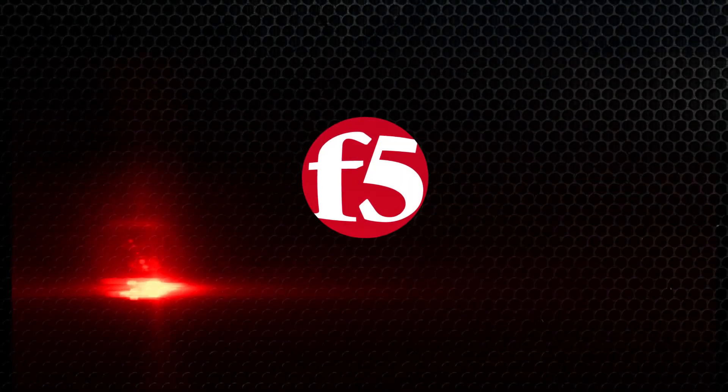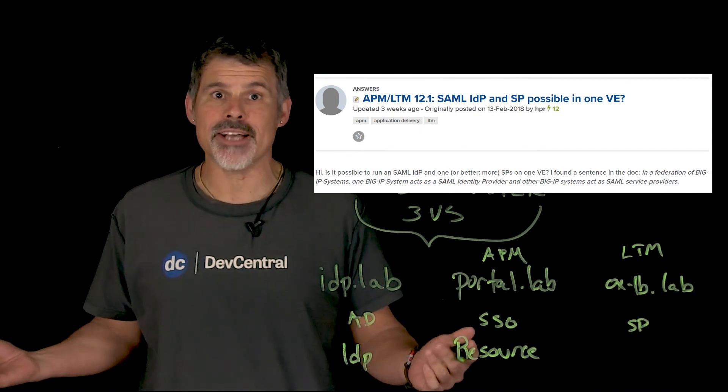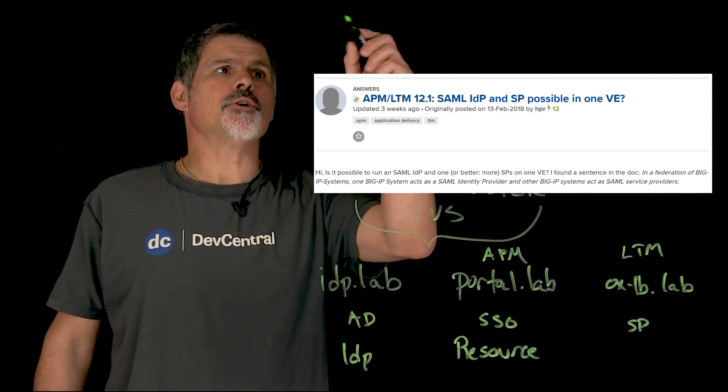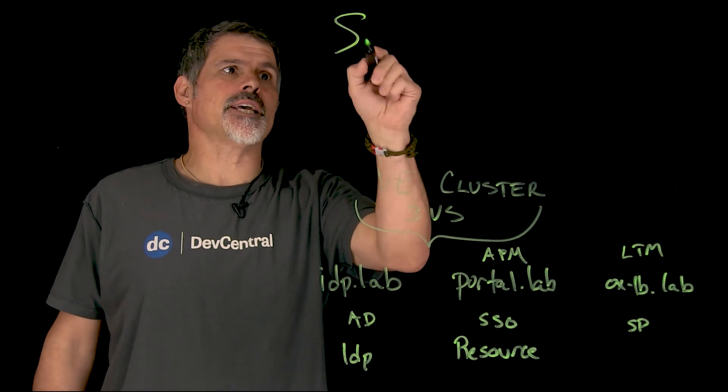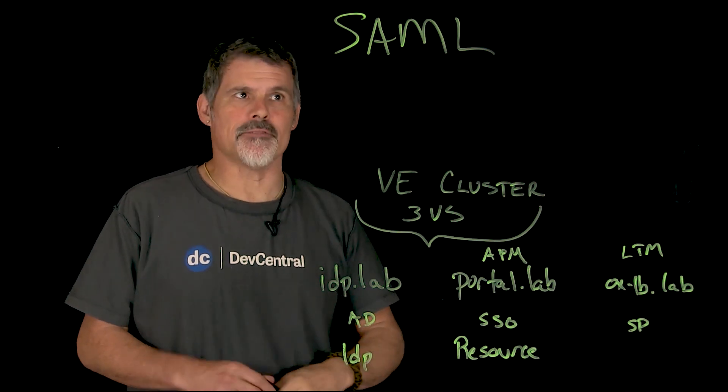I'm Peter, and we're going to find out if it's possible to do a SAML IDP and SP on a single BIG-IP, this time on F5 Dev Central's Lightboard Post of the Week. Dev Central member HPR asks: is it possible to do federation, and specifically SAML requests, on a single BIG-IP device?